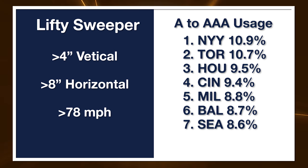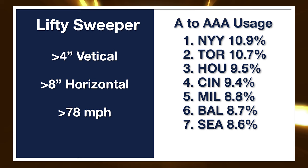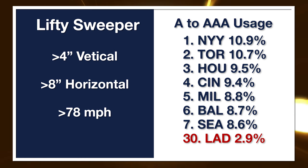This list is interesting because it's a mixture of a lot of the teams from the Yankee cutter list — the Yankees, Houston still in there, Milwaukee, Baltimore — and we get some new names in Toronto and Seattle. But wait, where did the Dodgers go? They were number two on our list for that Yankee cutter shape. On this sweeper with lift shape, the Dodgers fell all the way down to 30th in the minor leagues, throwing only 2.9% of this lifted sweeper shape while the Yankees threw upwards of almost 11%.